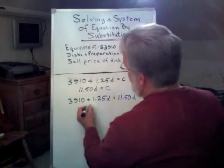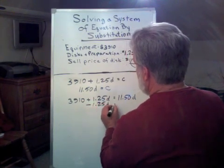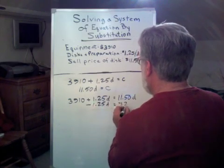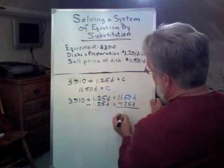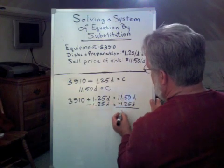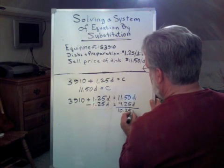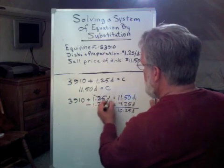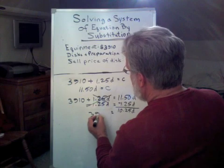Now we're going to subtract this from both sides. We're going to come up with our answer here. This looks like $10.25 times D. Those two go away.